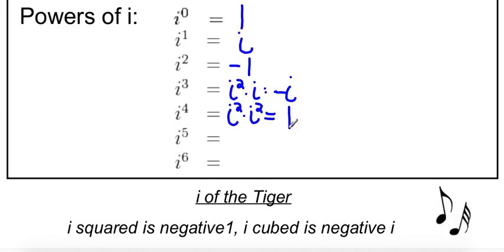And i to the fifth, that's the same thing as i squared times i squared times i, just splitting it up. You can split it up differently, too. And i squared and i squared are both negative 1, so you have negative 1 times negative 1, which is positive 1, and then you've got this i. So this is i.